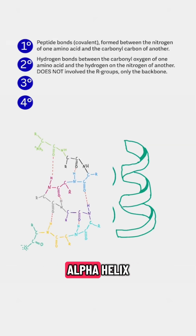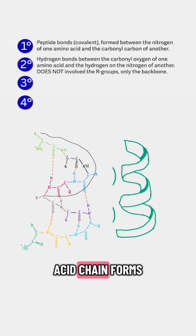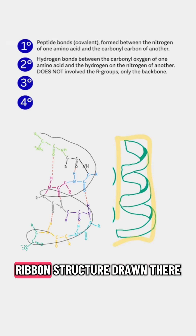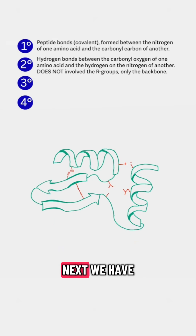The last secondary structure is an alpha helix, and this occurs when the amino acid chain forms a helix structure. You'll see these represented by this ribbon structure drawn there.